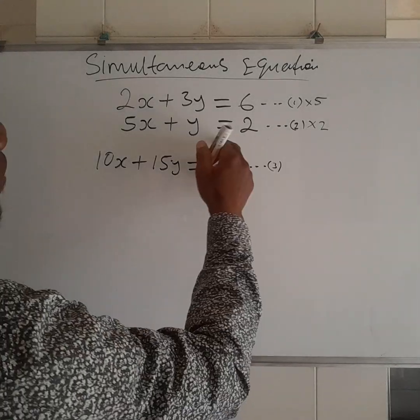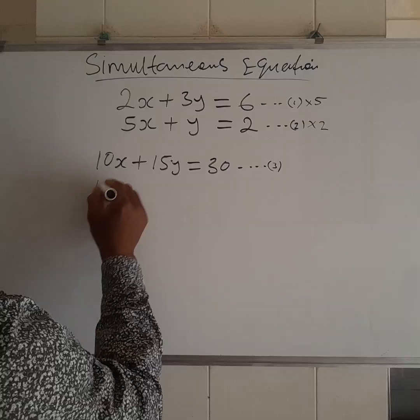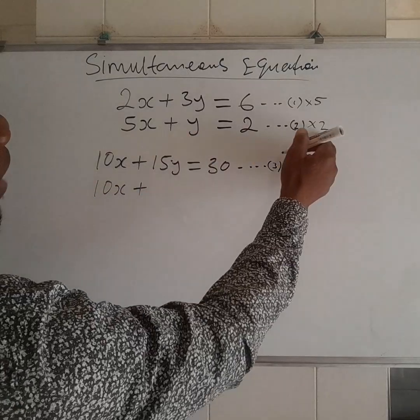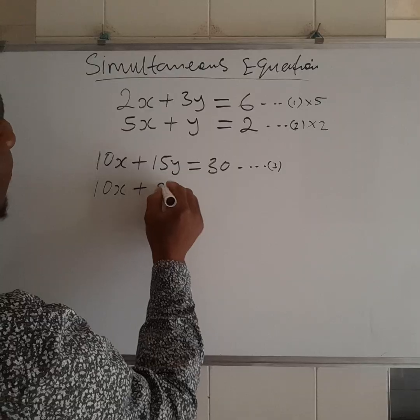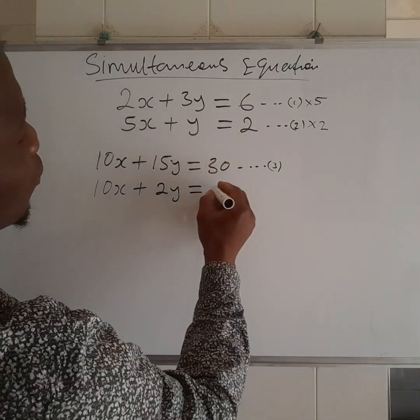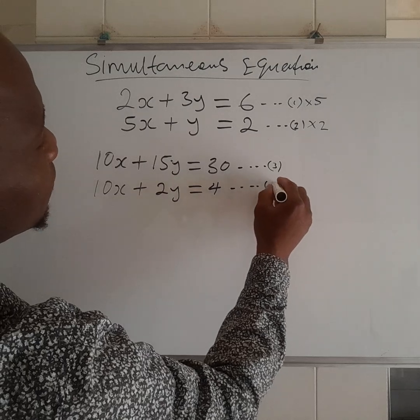Then, from equation 2, 2 times 5x, you have 10x plus y times 2, you have 2y. It is equal to 2 times 2, you have 4. This is your new equation 4.